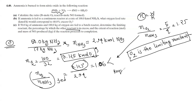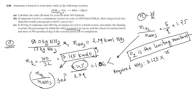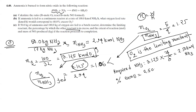The oxygen required to react with all the NH3: using the 4 by 5 ratio, 3.125 times (4/5) = 2.5 kilomol O2 is required. For percentage excess NH3: the NH3 fed is 2.94 kilomol, and the NH3 required stoichiometrically with 3.125 kmol O2 is 2.50 kmol. So percentage excess = (2.94 - 2.50) / 2.50 × 100 = 17.6 percent.